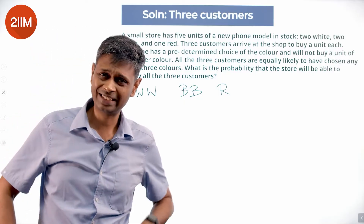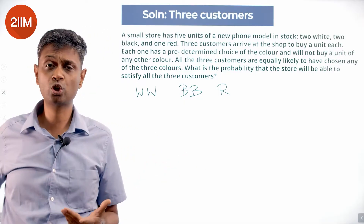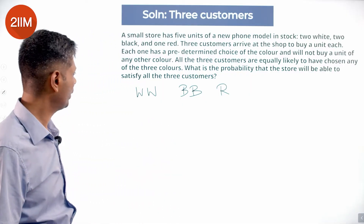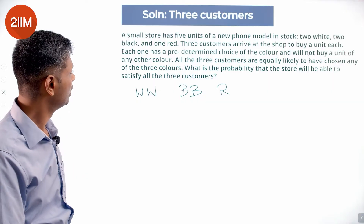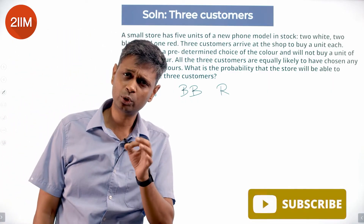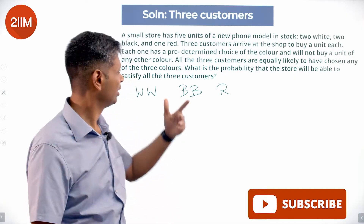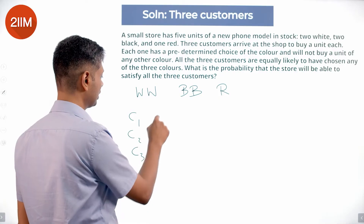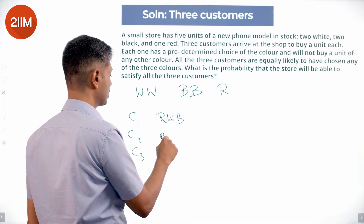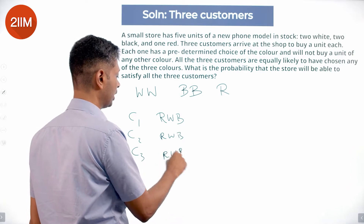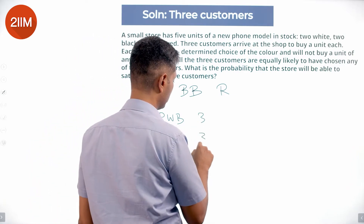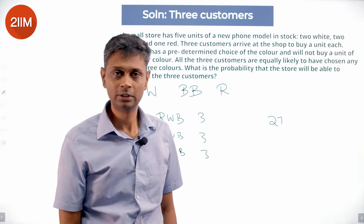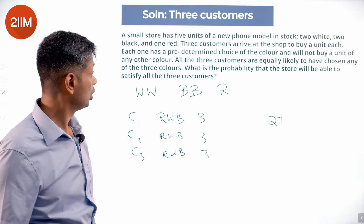What is the probability the store will be able to satisfy all three customers? Excellent question — probably the kind of question every storekeeper managing an inventory has to ask. We have two whites, two blacks, and one red. Three customers equally likely to choose W, B, or R. I love getting the denominator first. Customer one, customer two, customer three — each could ask for red, white, or black. So total possibilities: 3 × 3 × 3 = 27.